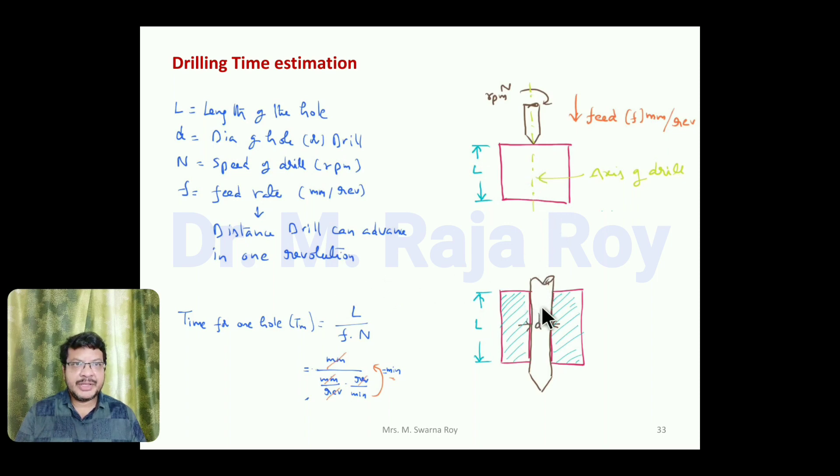After preparing the hole, the drill bit portion will be like this—D is the diameter of the hole. To make this hole, we have to estimate the time. That time for drilling the hole T equals L divided by F times N. L is the length of the hole, F is the feed, N is the speed in rpm.